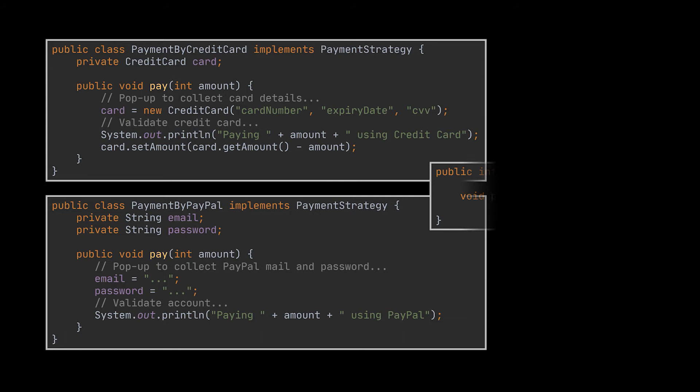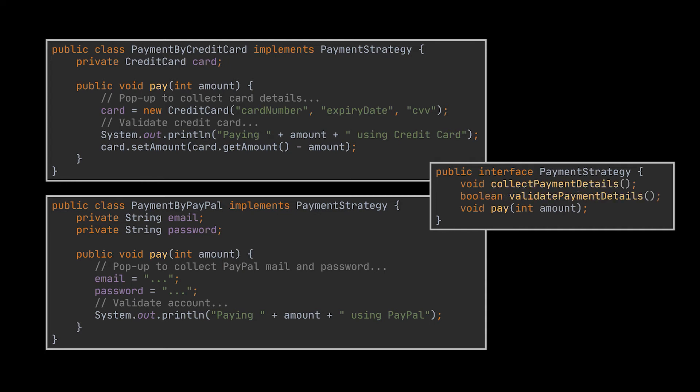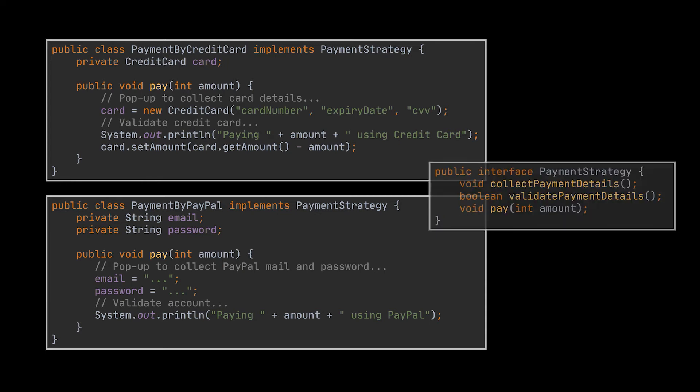To make these classes interchangeable, you have to create a common interface for all of them to implement. You can also go one step further and extract the common behaviors into separate methods instead of dumping all the logic into a single one.